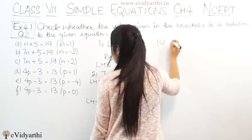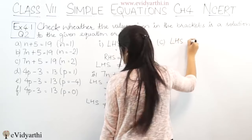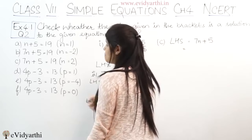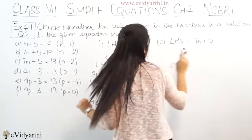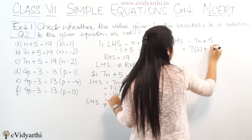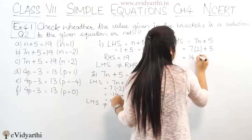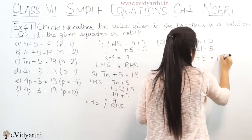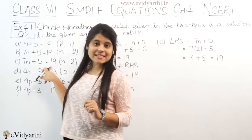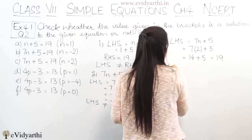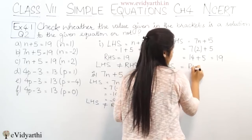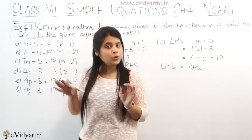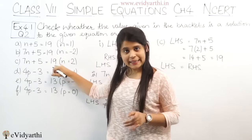Now let's look at part C. The left hand side is again 7n + 5, but in part C the value of n given is 2. So putting n = 2: 7 times 2 plus 5 gives 14 plus 5, which is 19. And the RHS is also 19. So LHS equals RHS — this value is true and is a solution for this equation.